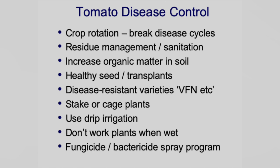Healthy seed and transplants are key — a lot of times diseases are there and you don't see them, then you stick them out in the field. Try your best to get healthy-looking transplants and use high-quality seed. When you start saving your own seed you've got to find a way to disinfect it, because a lot of these bacterial diseases are seed-borne. If you've got spots on your fruit and extract seed from there, you'll probably have some bacteria on that seed. Typically Clorox is used, but there are other options.